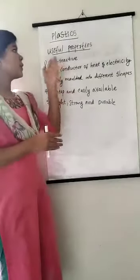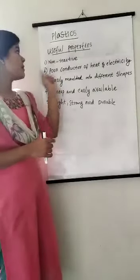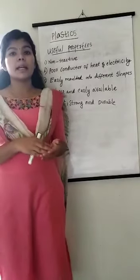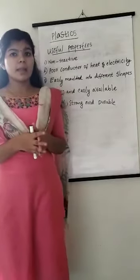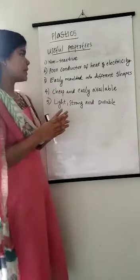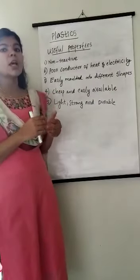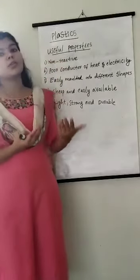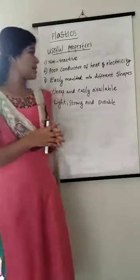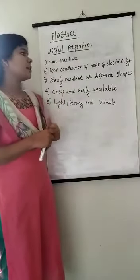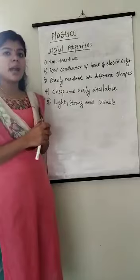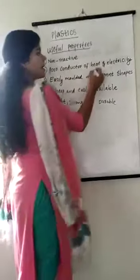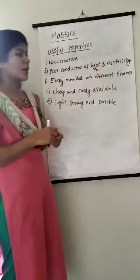Now, what are the useful properties of plastics? First, plastics are non-reactive — they do not react with water, acids, or bases, whereas most other materials do react with these. Because of this property, we use plastic bottles to store food. Second, they are poor conductors of heat and electricity. This property is utilized in making the handles of cooking utensils.